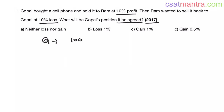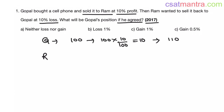You can assume it 100 because you are not violating any rule given in the problem. Gopal sold it to Ram at 10% profit. 10% of 100 is 100 × 10/100, which equals 10. So he sold it at 10% profit, that is 100 + 10 = 110 rupees. So Ram bought the cell phone from Gopal at 110 rupees.